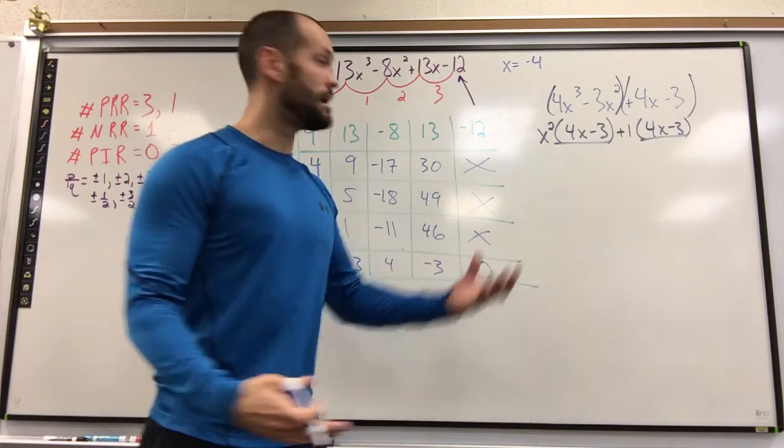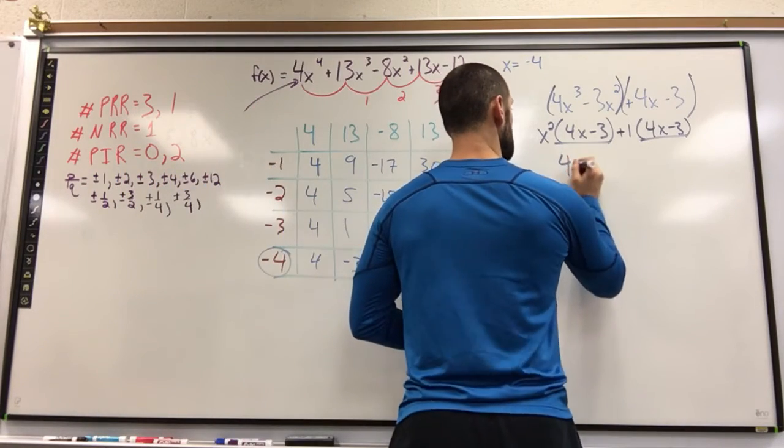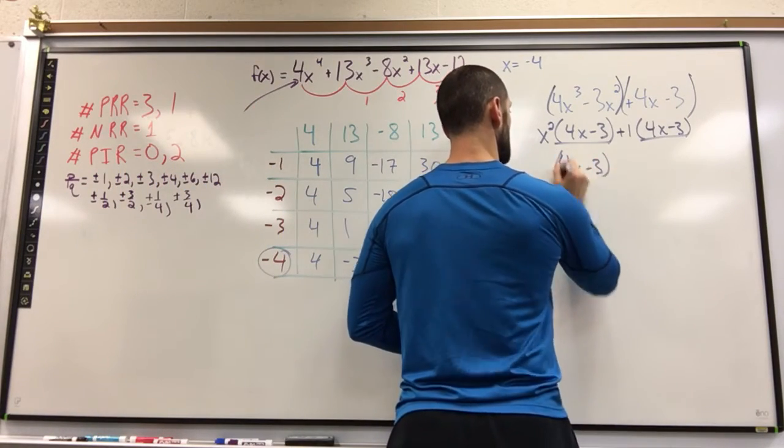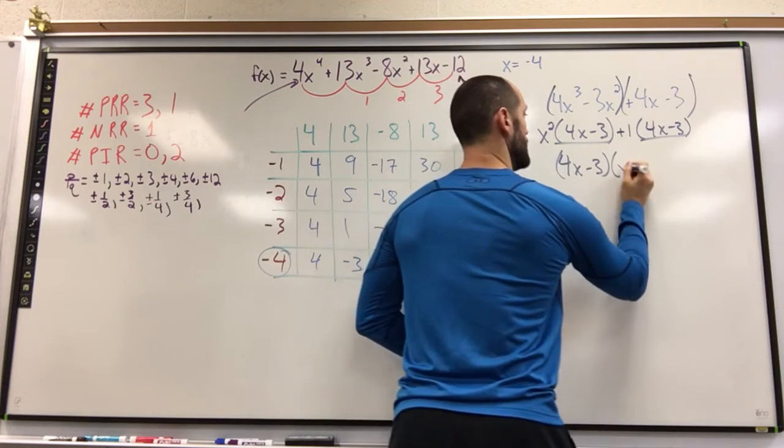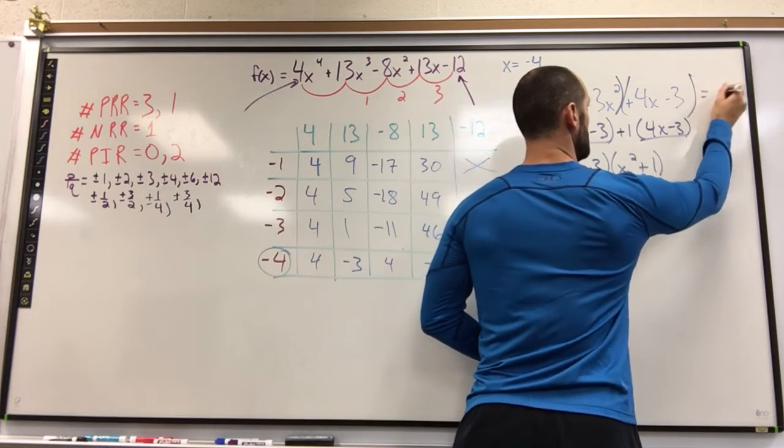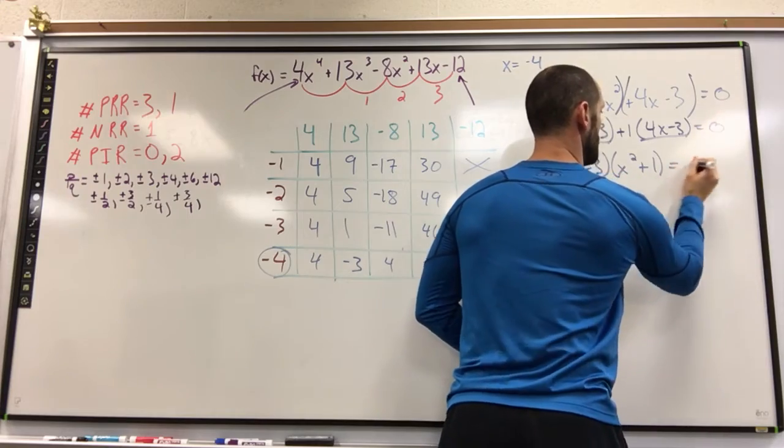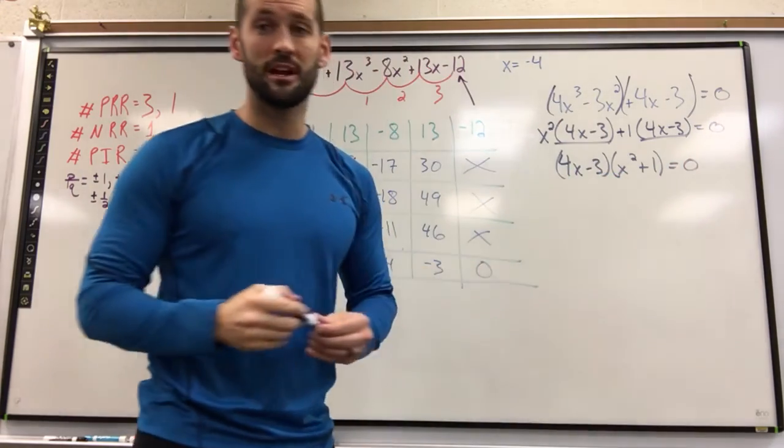Notice they share the 4x minus 3 now. That becomes my new GCF. I pull that out, leaving me with 4x minus 3 on the outside and x squared plus 1 on the inside. Now our goal has been to solve this the whole time, and now I'm ready to solve.